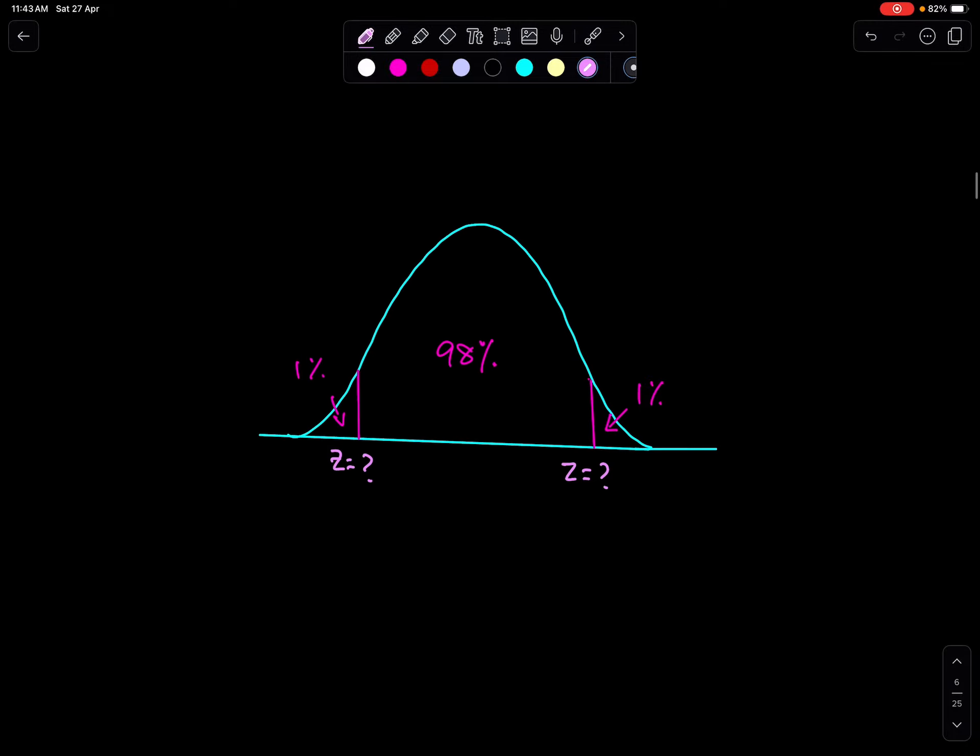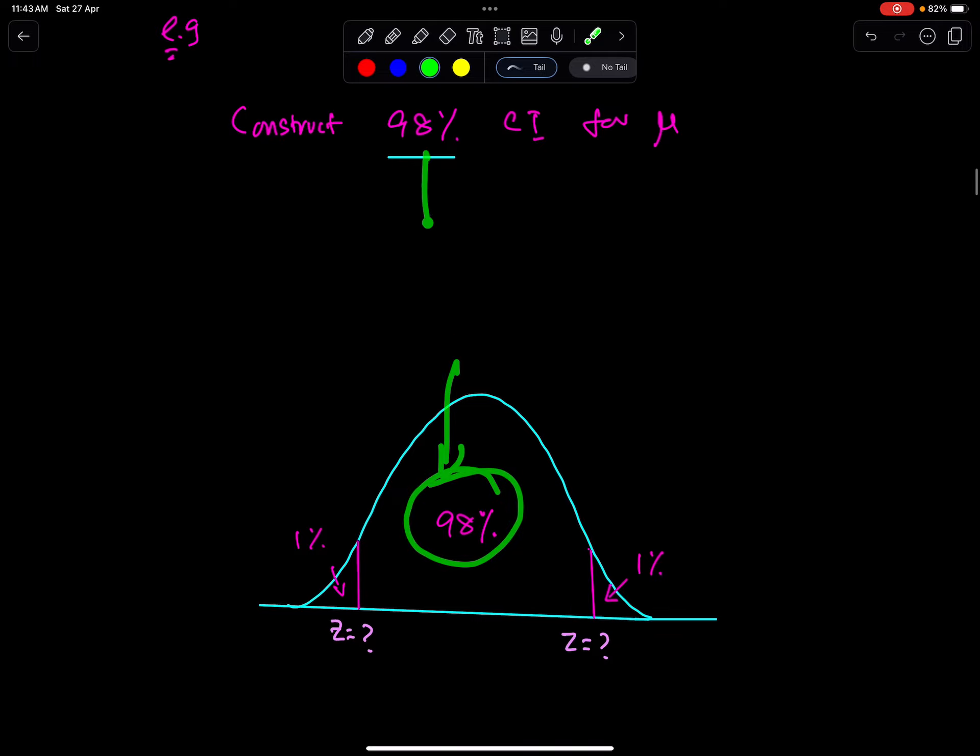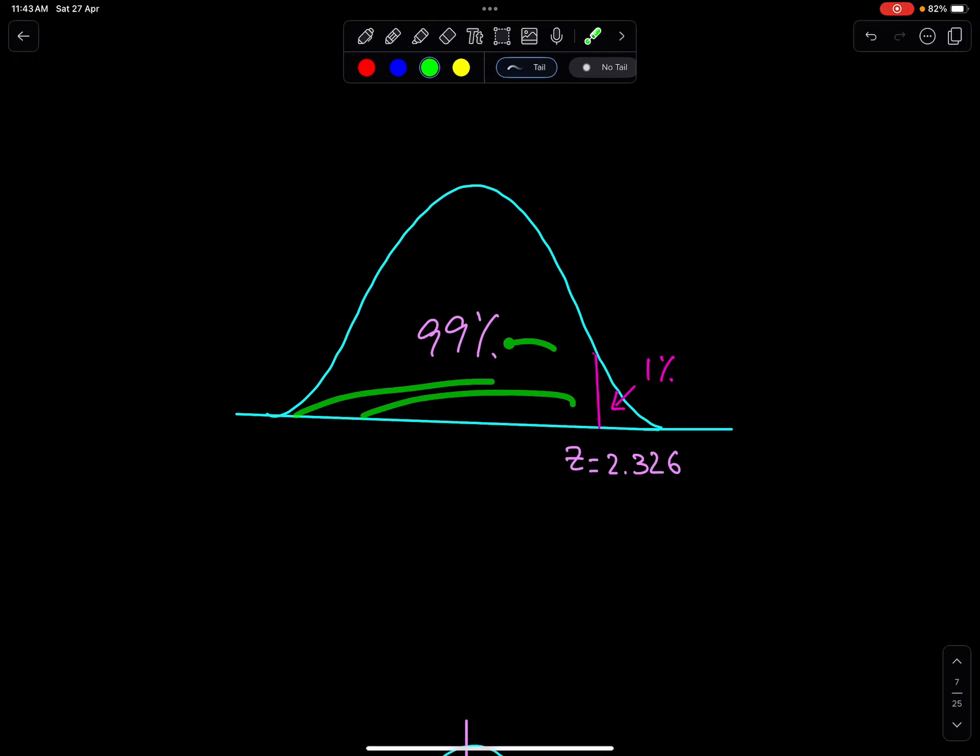So first write this 98% here, 1% each. Then take this total area which is 99%. Get the value of Z.